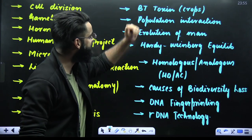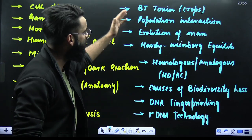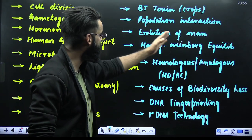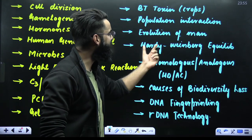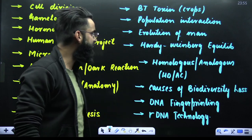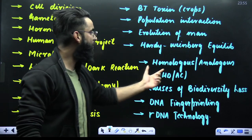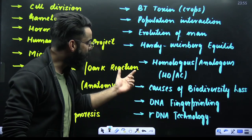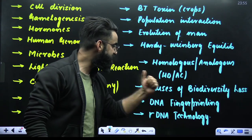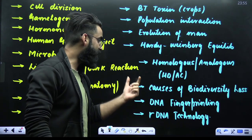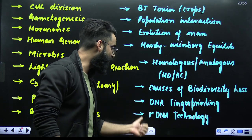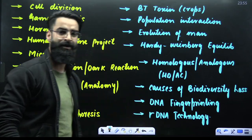Similarly, you have got BT toxin, population interaction, evolution of man, Hardy-Weinberg equilibrium, homologous, analogous, HDAC, causes of biodiversity loss, DNA fingerprinting, and rDNA technology.